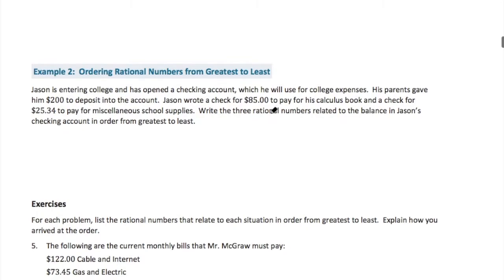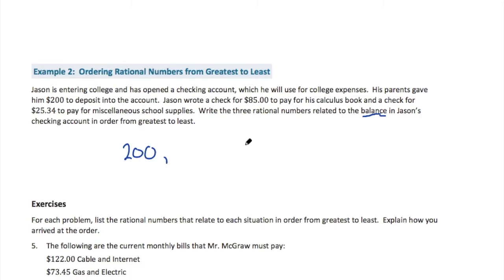We can also order numbers from greatest to least — sometimes that's applicable and relevant to the problem. Jason is entering college and has opened a checking account for his college expenses. His parents gave him $200 to deposit. Jason wrote a check for $85 to pay for his calculus book and a check for $25.34 for miscellaneous school supplies. Write three rational numbers related to the balance in Jason's checking account from greatest to least. When Jason started, he had positive $200 — that was the balance. Since we're talking about his balance, we want to talk about the effect the expenses have on how much money he has.